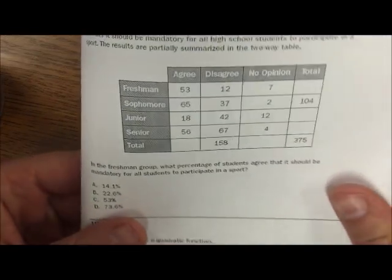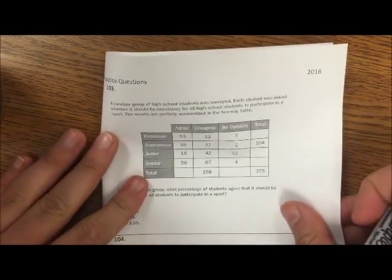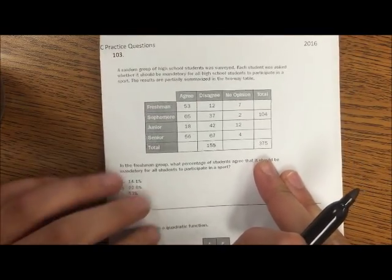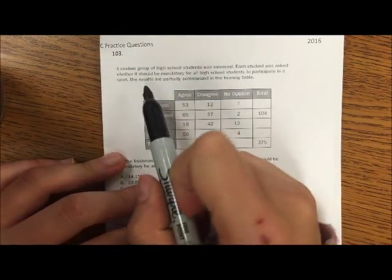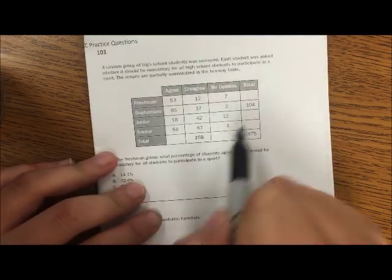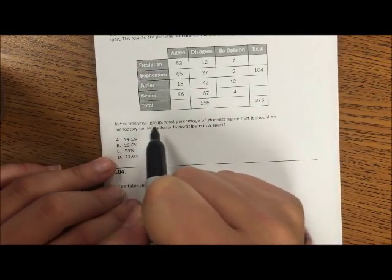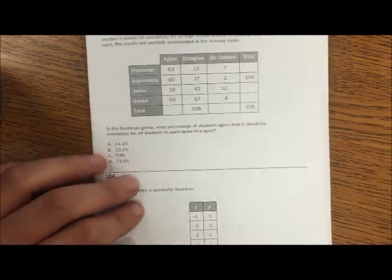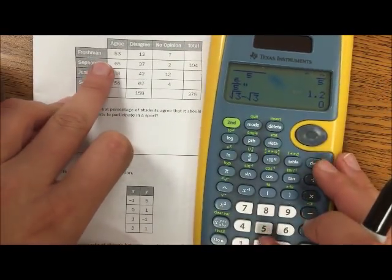103. A random group of high school students were surveyed. Each student was asked whether it should be mandatory for all high school students to participate in a sport. And then here are my results. In the freshman group, let's find the total of freshmen. Let's fill in this table first.